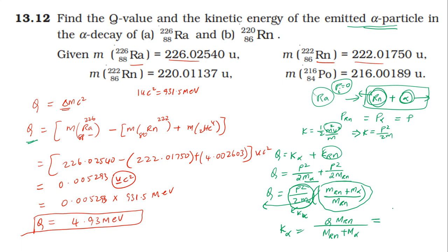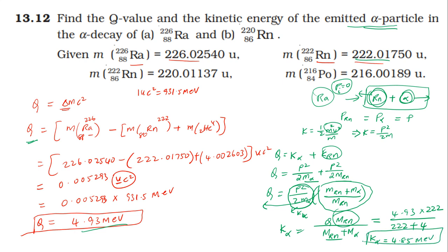Kinetic energy of alpha particle equals Q value 4.93 divided by: mass of Rn approximately 222 plus mass of alpha particle 4, all over mass of Rn 222. This gives approximately 4.85 MeV. So the kinetic energy of the alpha particle, which is inversely proportional to its mass, is 4.85 million electron volts — most of the Q value energy.